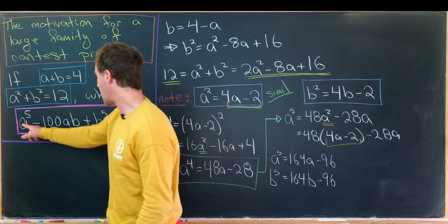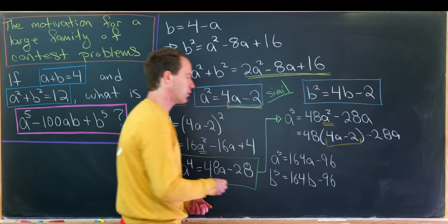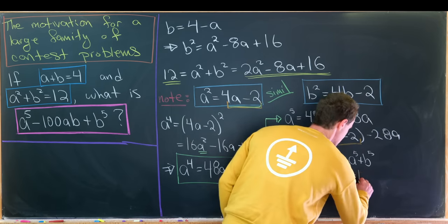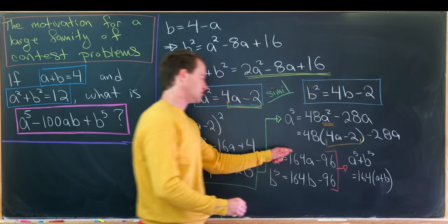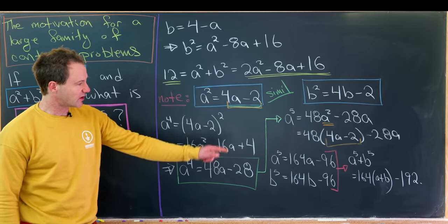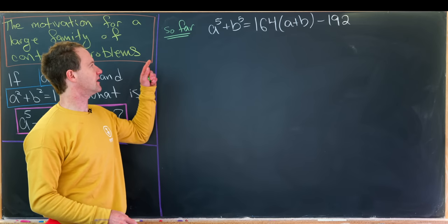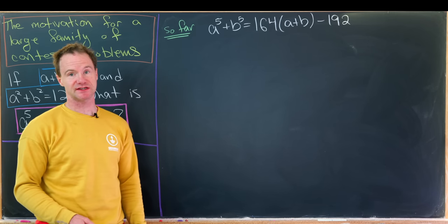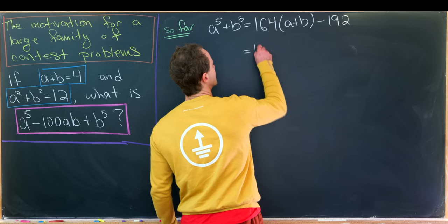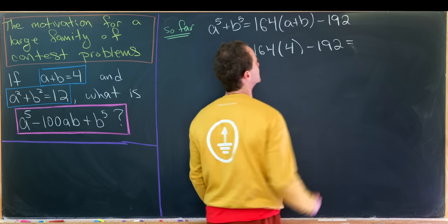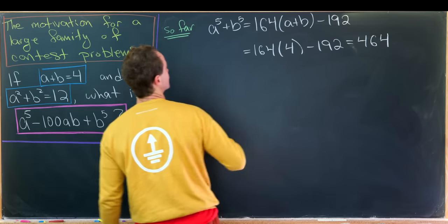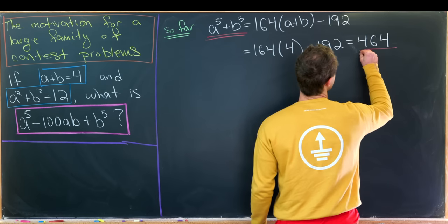Notice we have a to the fifth plus b to the fifth, so let's look at that expression. It equals 164 times (a plus b) minus 192. Since a plus b equals 4, this is 164 times 4 minus 192, which gives us 464. So a to the fifth plus b to the fifth equals 464.